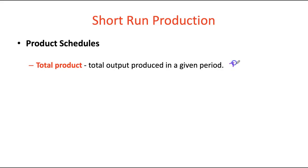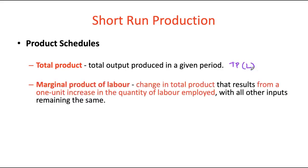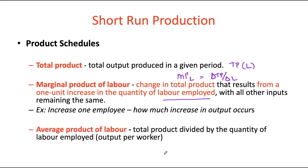Total product gives us the relationship between total output produced in a given time period as we increase or decrease our variable input — it's a function of our variable input. Marginal product of labor looks at the change in total product because of one additional unit of labor employed: as we increase our variable input, by how much does total product change? Average product of labor is simply the per-unit output produced by each worker — total product divided by number of workers hired — a measure of average worker productivity.